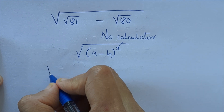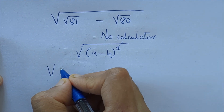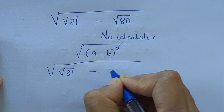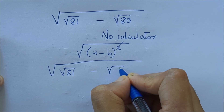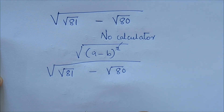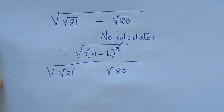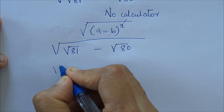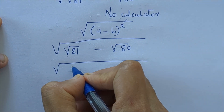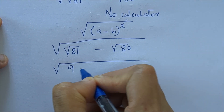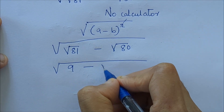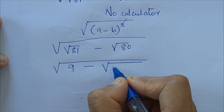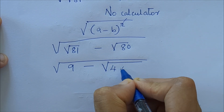Let's rewrite the question: root of (root 81 minus root 80). We know root 81 is 9, so we have 9 minus root 80, and root 80 can be written as root of 4 into 20.